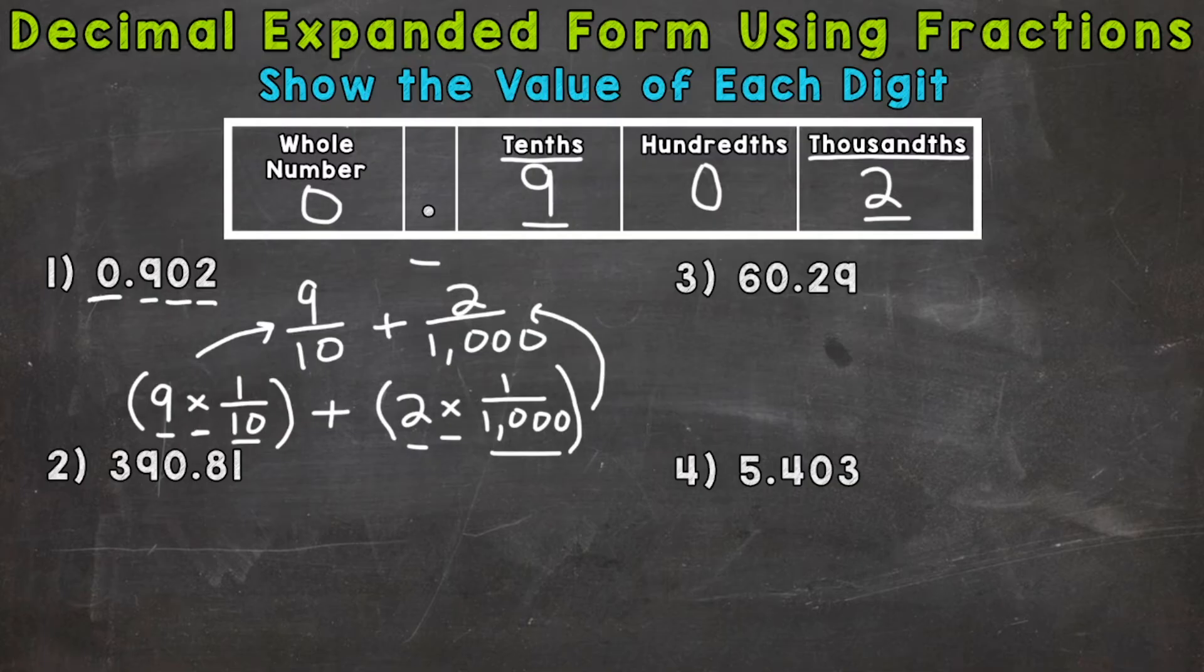So two different ways to expand nine hundred two thousandths out. One just plain fractions, and the other, which I call the parentheses method, includes the digit in the place times the value of that place, meaning we had a nine in the tenths place and a two in the thousandths place.